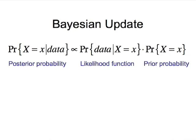Here we see a mathematical expression of Bayesian update. The posterior probability is proportional to the likelihood function times the prior probability.